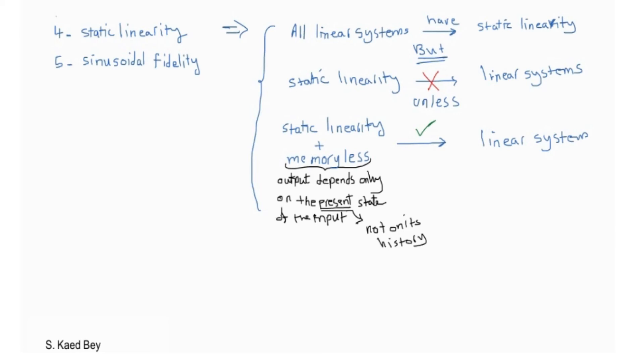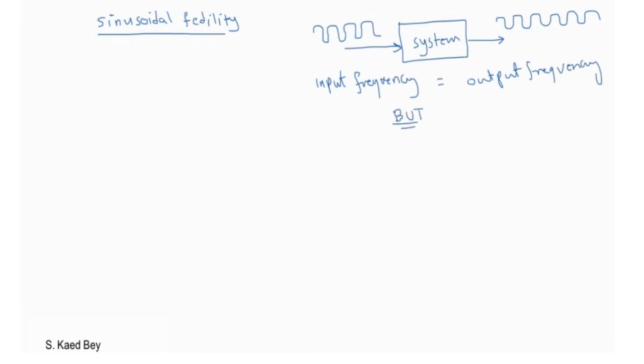Now, last important characteristic of linear systems that we will be discussing for the sake of this course is how they behave with sinusoids. This property is often called sinusoidal fidelity. This means if the input to a linear system is a sinusoidal wave, then the output will also be a sinusoidal wave at the same frequency as the input.